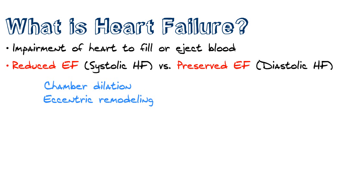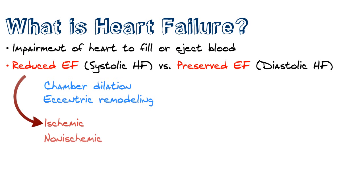This creates a larger, dilated chamber of the heart. Eccentric remodeling can be due to many things — hypertension and valvular disorders — because of pressure placed on the ventricle. As a result of the dilation, the wall muscle of the heart is weakened, creating a reduced ejection fraction. The causes of reduced ejection fraction heart failure are split into ischemic causes — any type of heart attack — and non-ischemic causes, including hypertension and valvular disorders.